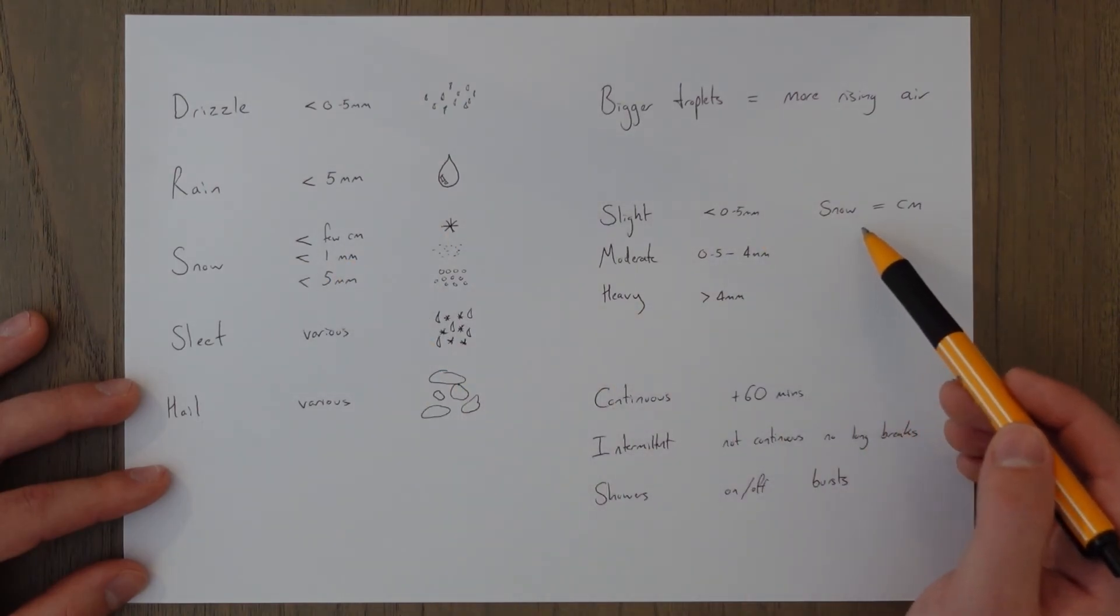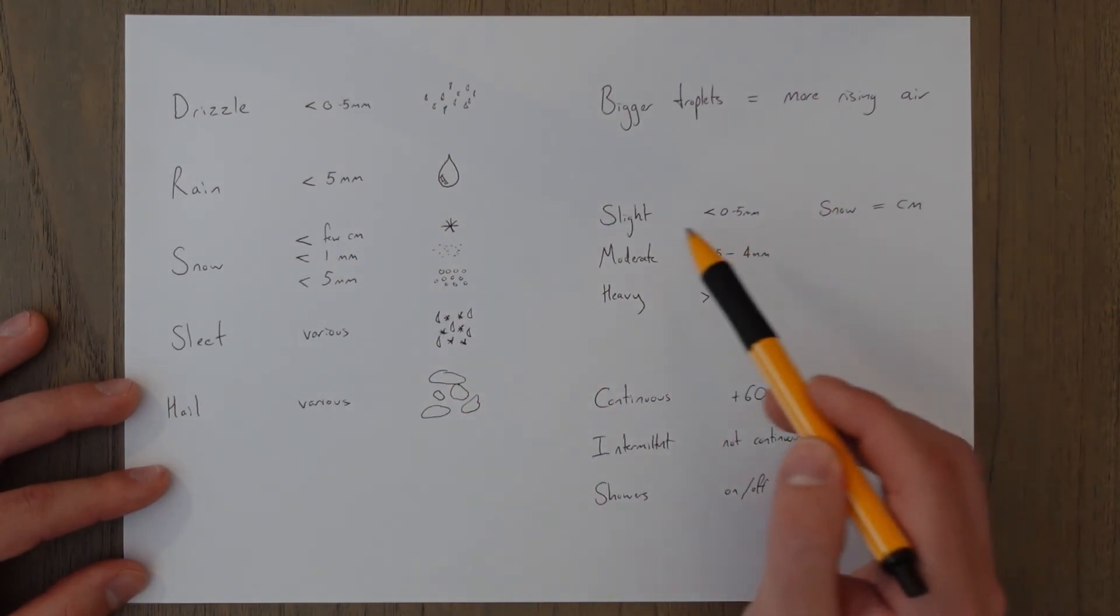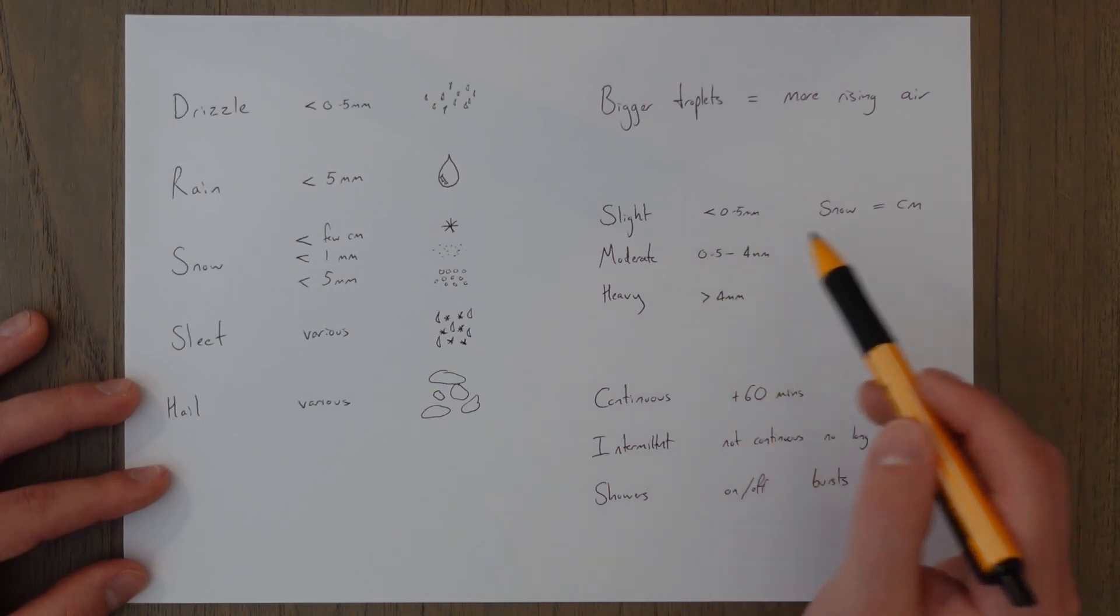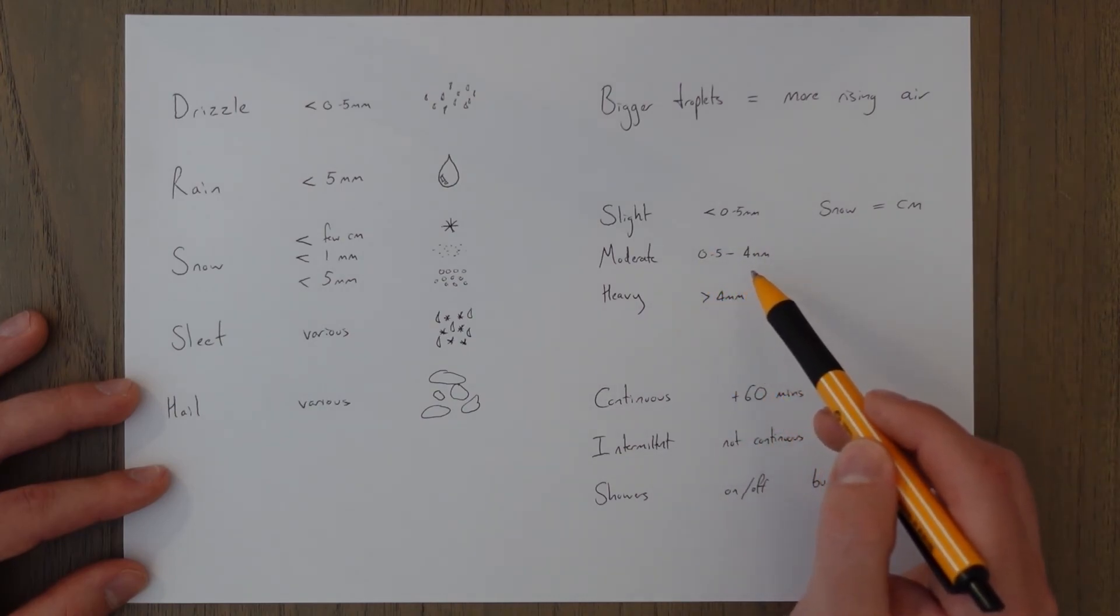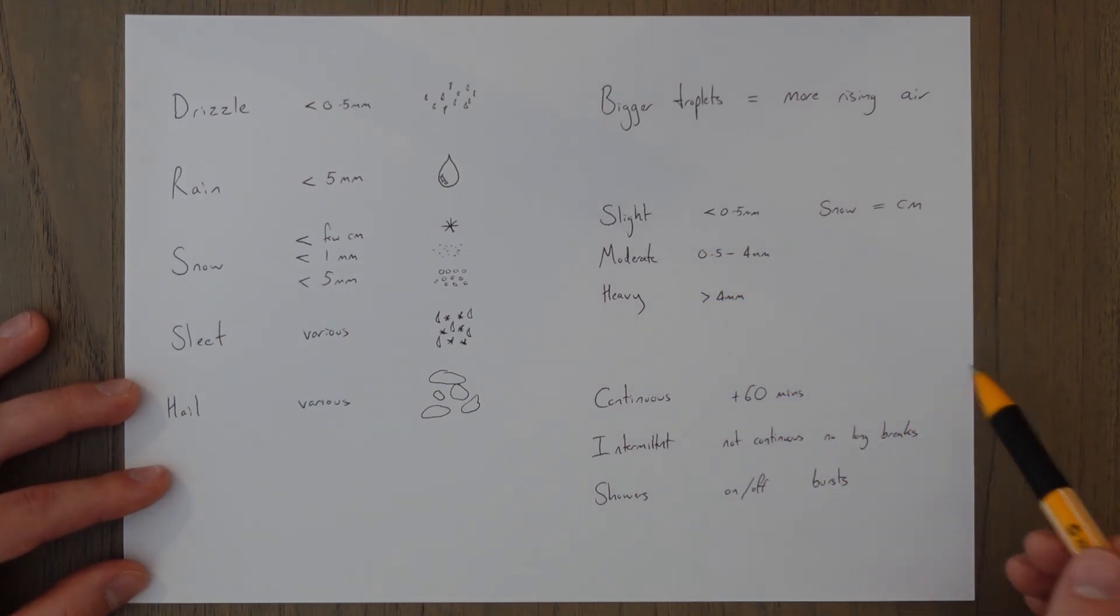And then for the snow and ice-based ones you just use centimeters. So slight snow or moderate snow would be 0.5 centimeters to 4 centimeters. And then the duration.